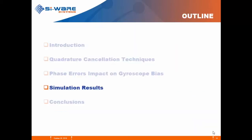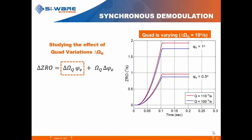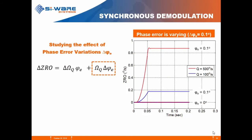Some simulation results to back up the analysis: we built a MATLAB model including PI controllers and a MEMS second-order model, and studied zero rate output variations under quadrature amplitude variation and phase error variation. For the synchronous demodulation case, this curve shows that with a change of 10 degrees per second, the higher the phase error, the higher the zero rate output change. The second term for synchronous demodulation shows delta phi_error change, with the blue line for quadrature of 100 dps and the red line for 500 dps.